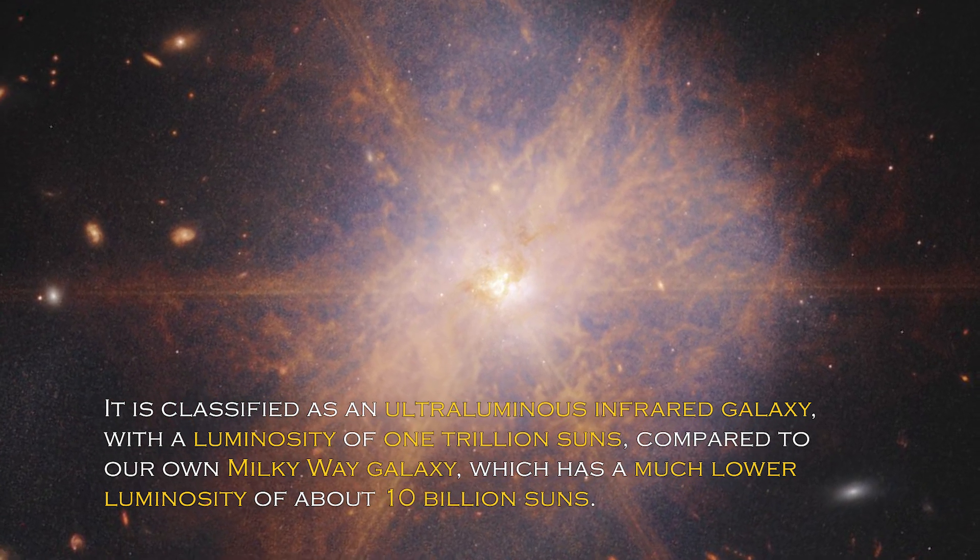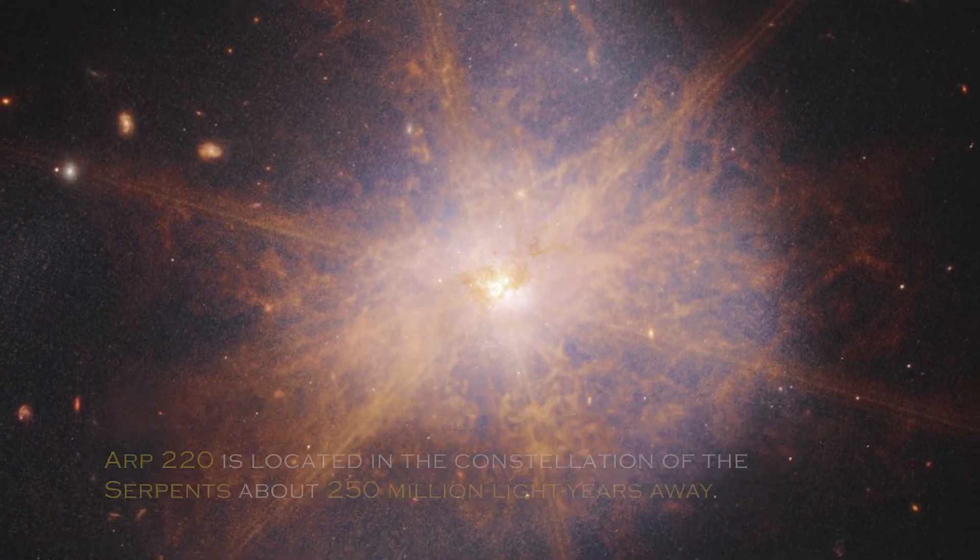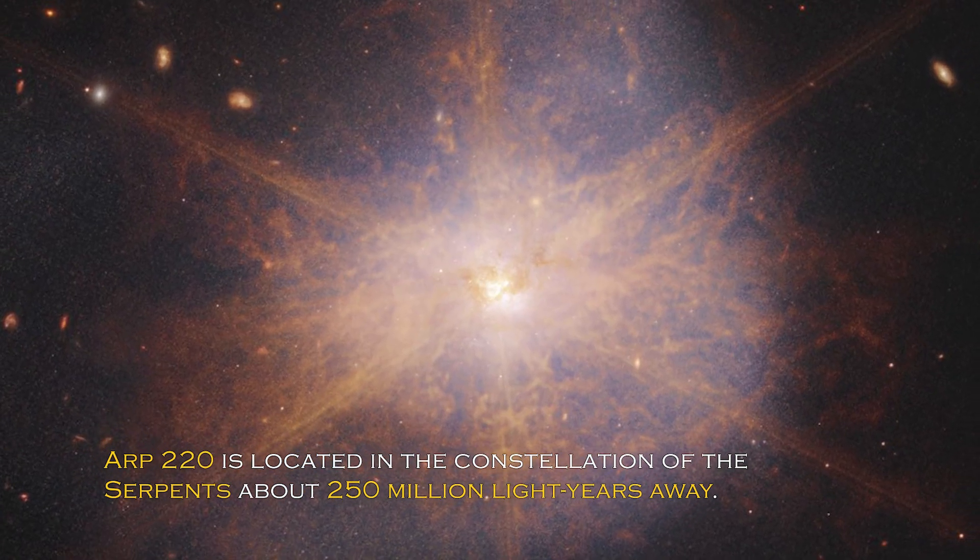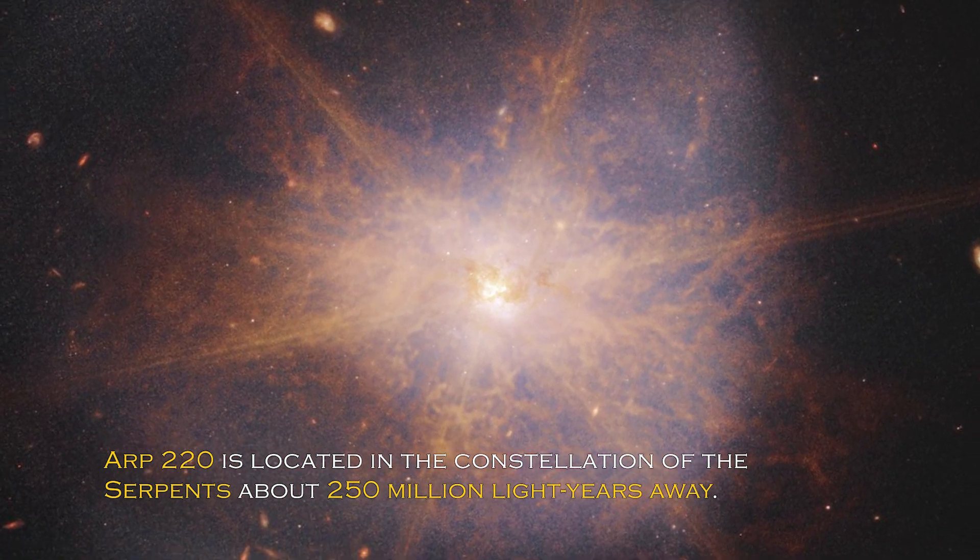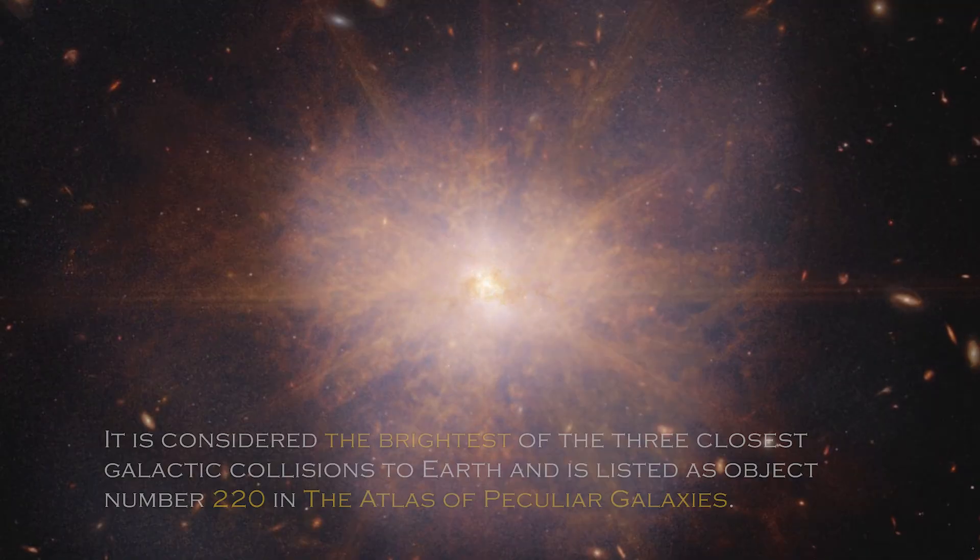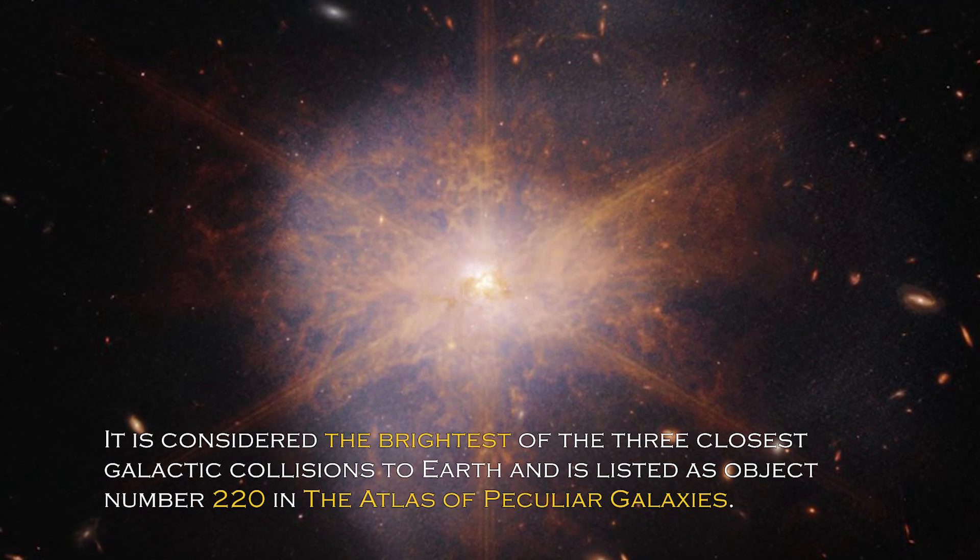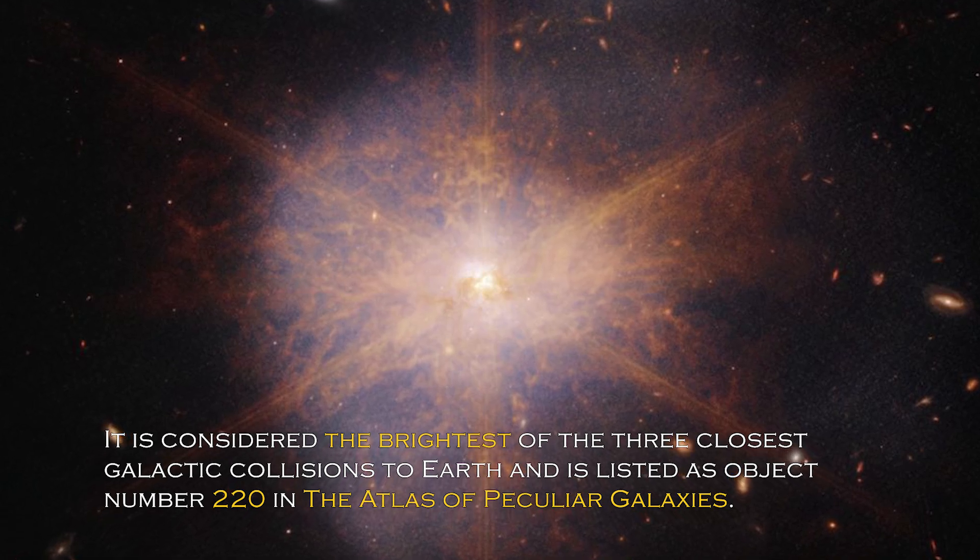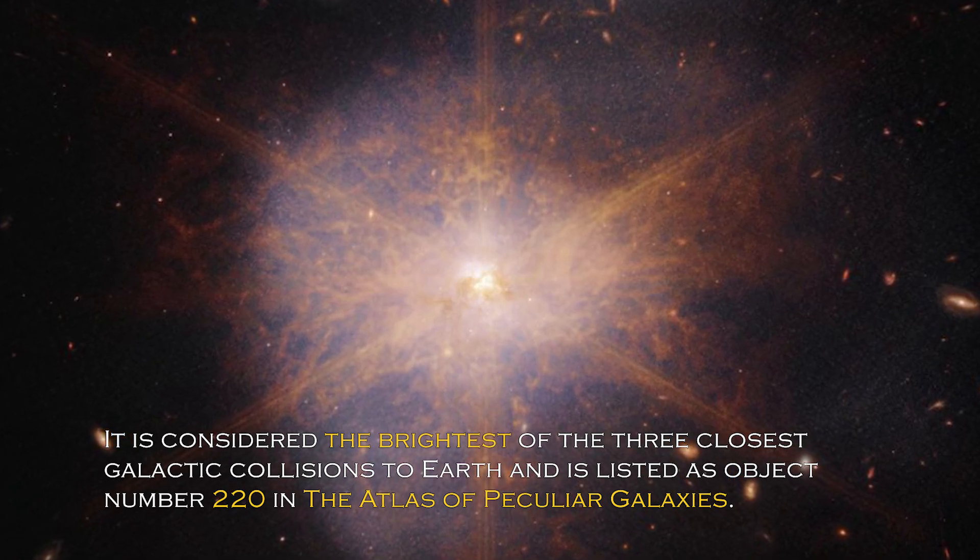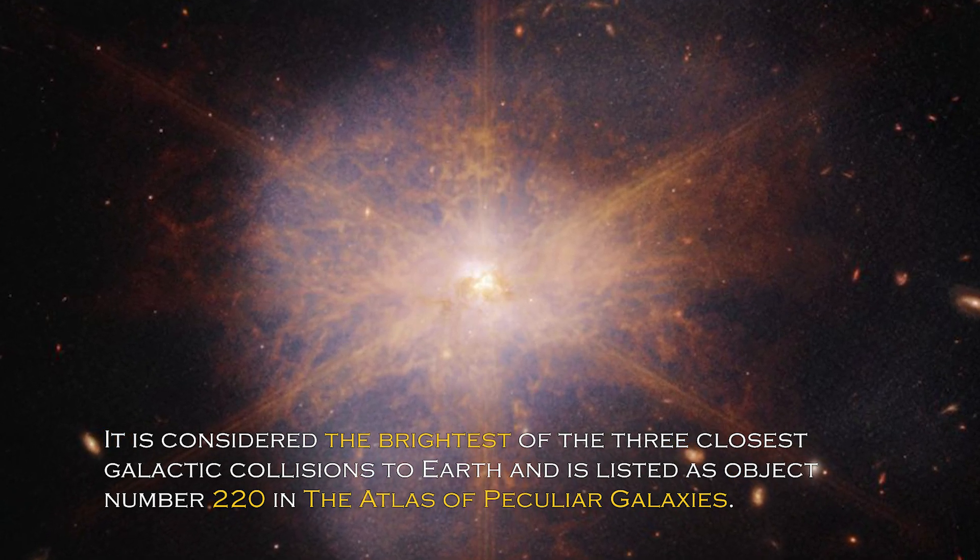ARP 220 is located in the constellation of Serpens, about 250 million light-years away. It is considered the brightest of the three closest galactic collisions to Earth, and it is listed as object number 220 in the Atlas of Peculiar Galaxies.